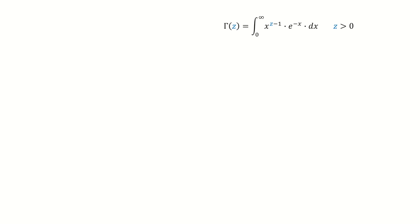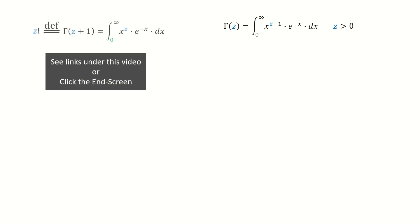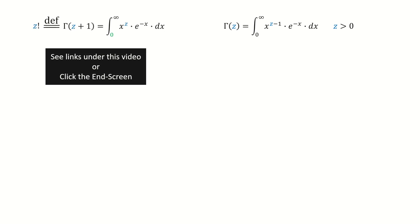Here is the definition of gamma function. Recall the property we covered from the last episode. Next, we make a substitution. We define x in this way.